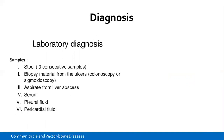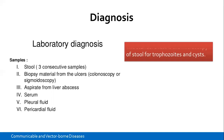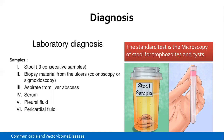Diagnosis is mainly done through laboratory methods, primarily by taking a stool sample. Three consecutive samples can be taken. In stool, you will mostly see cysts, or if it is a loose diarrheal stool, trophozoites as well. If the infection has gone to the liver, the liver abscess can be aspirated. Serum can be checked for antibodies if it has penetrated the portal circulation. Pleural fluid is checked if it has gone to the lungs, and pericardial fluid if the heart is affected. The standard test is microscopy of stool for trophozoites and cysts.